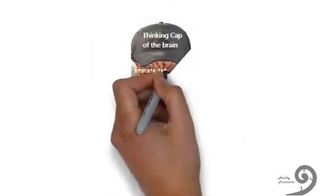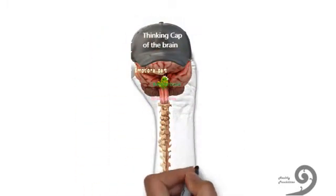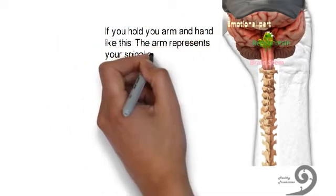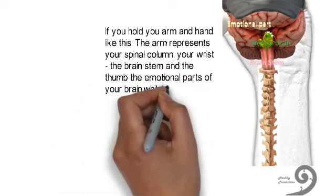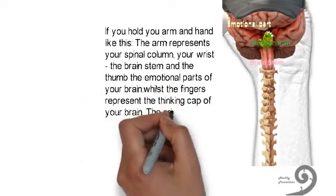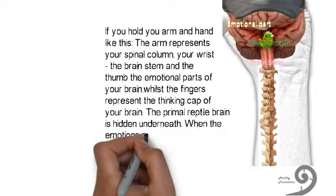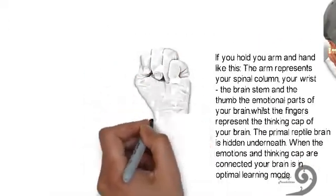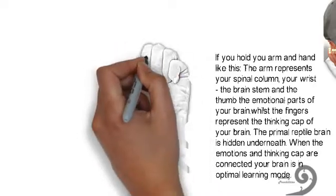If you hold your arm upright with your thumb folded in underneath your fingers in a fist, the arm represents your spinal column and your wrist is the brain stem, whilst your thumb is the emotional parts of your brain and the fingers represent the thinking cap of your brain. The primal reptile brain is hidden underneath.